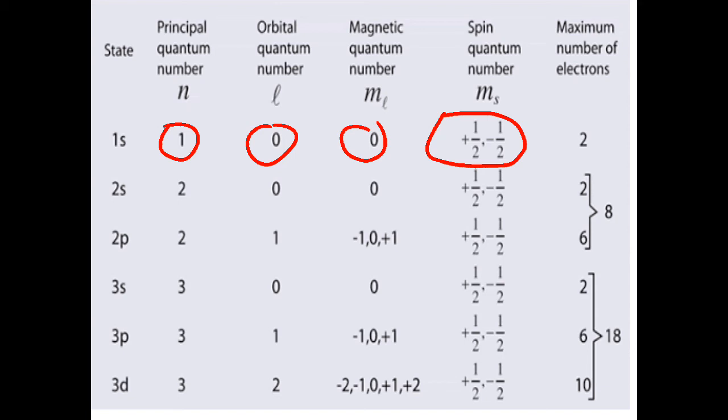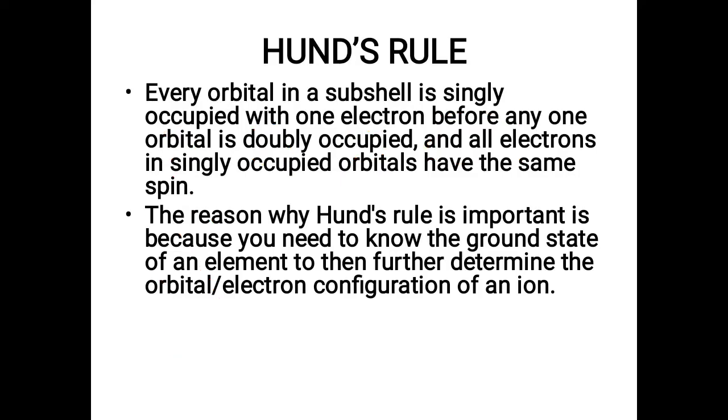Now you can practice for more. Now last is Hund's rule. Every electron in a sub shell is singly occupied with one electron before any one orbital is doubly occupied and all the electrons in singly occupied orbitals have the same spin. The reason why Hund's rule is very important is because you need to know the ground state of any element, then further we can determine about its excited state.